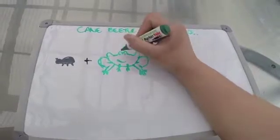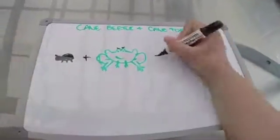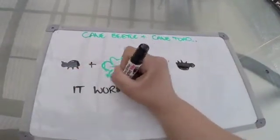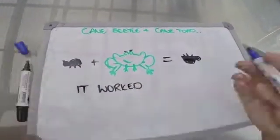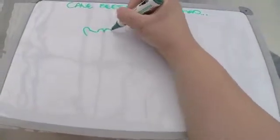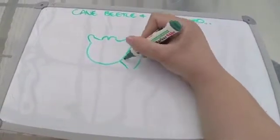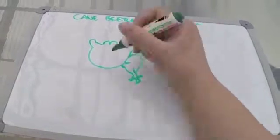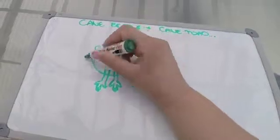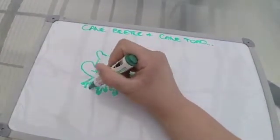This caused a population increase which has now covered almost half of Australia because the cane toad is not native to Australia. There is no animal with a natural tolerance to its poison, so it is able to live and breed without threat.